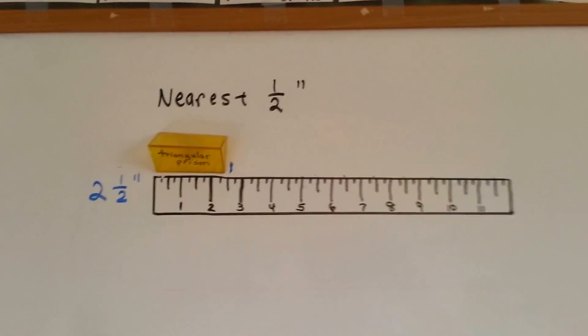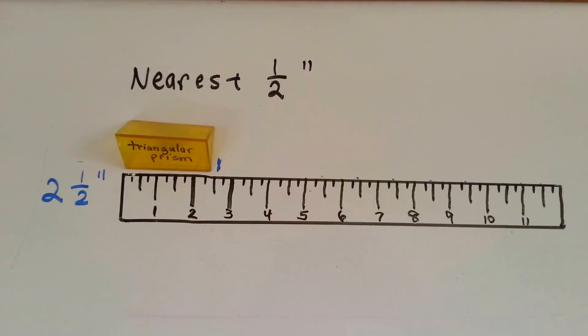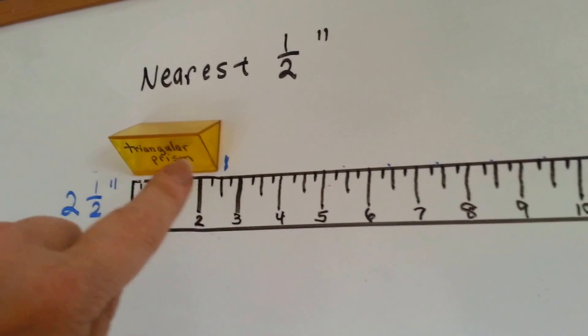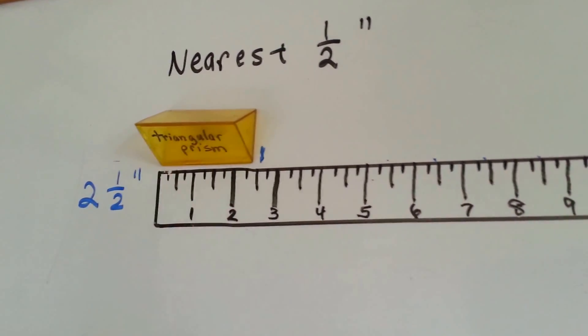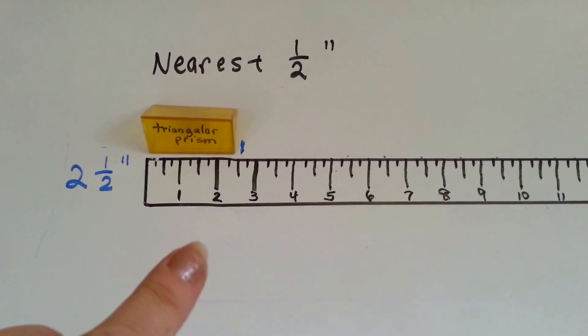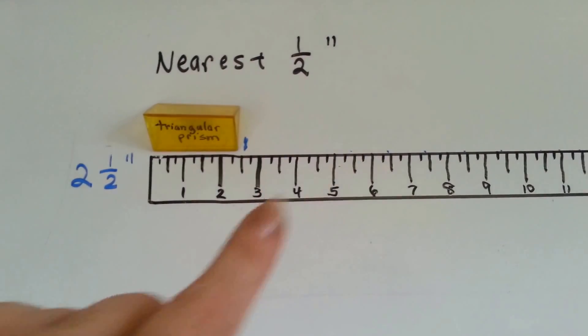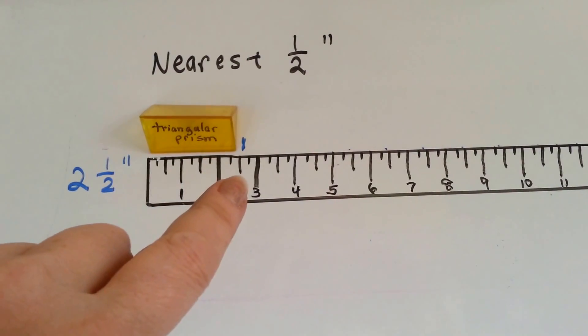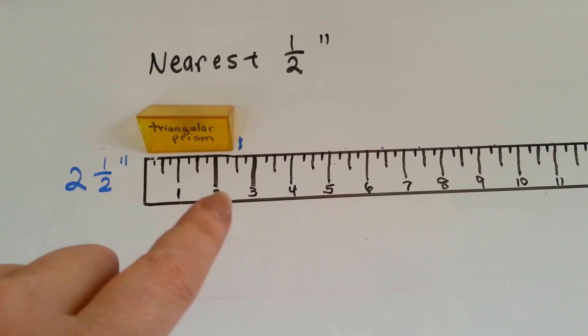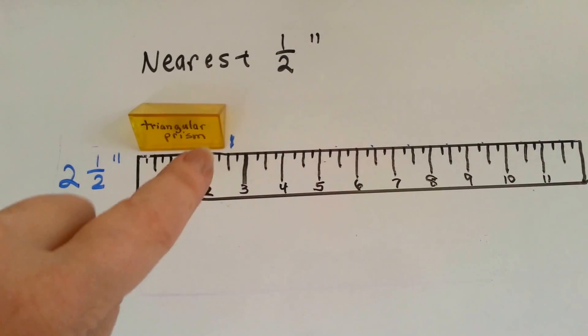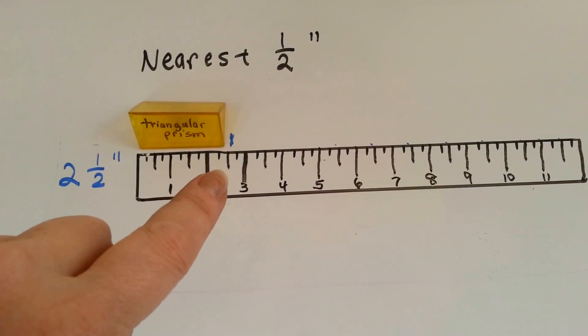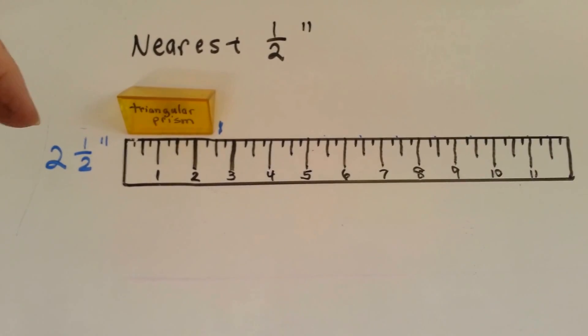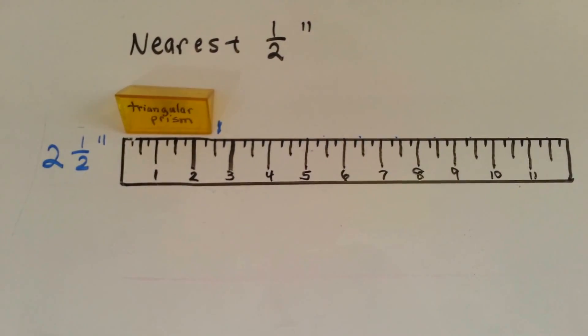So now look what I've got here. This is the actual size of a ruler. I measured it when I drew it. So I have a triangular prism. If we were to measure this to the nearest half inch, it's this middle length one in between the numbers. So it's past the two-inch mark and it's almost at two and a half. So if we were to measure this triangular prism to the nearest half inch, it would be at two and a half inches.